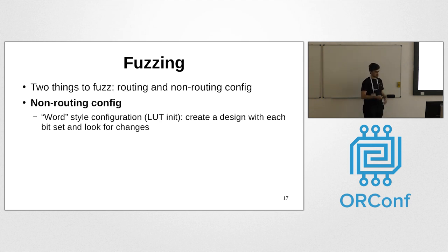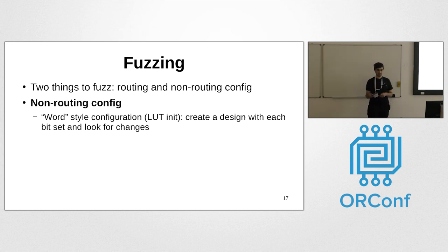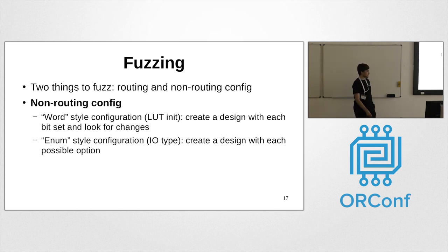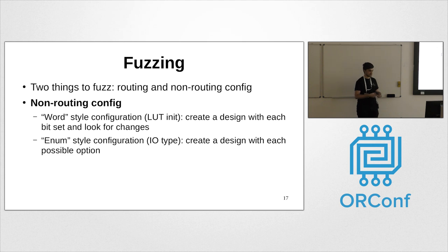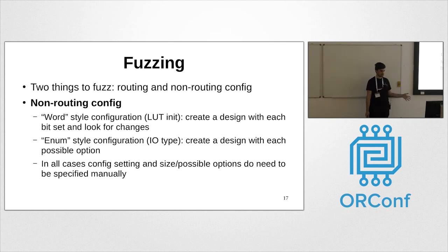For non-routing configuration there are two styles. Word-style configuration — like LUT initialization — is an array of bits where you create one design with each bit set and look for the corresponding change. Enum-style configuration — like IO type — is more like a string than a series of bits; you create a design with each possible configuration value and build up a table. This is slightly more manual than routing fuzzing since you need to create a fuzzer for each configuration setting, but the fuzzer then runs automatically.